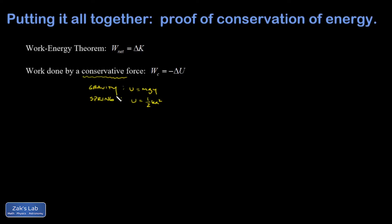That path independence is what makes it actually useful to define potential energy functions in the first place. All I need is an initial and final y-coordinate, and I have the work done by gravity — it doesn't matter how complex the path is. The same is true for a spring: give me an initial and final compression or stretch, and I can tell you the difference in potential energy and therefore how much work the spring has done.